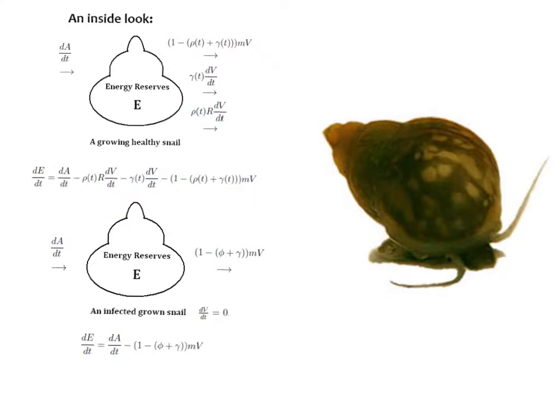As mentioned in the previous podcast, we developed a dynamic energy budget to monitor energy allocation patterns in healthy and infected growing snails. This was done through a series of differential equations. To ensure a more accurate and robust model, we generated the volume rate parameter based off of data collected in the lab.